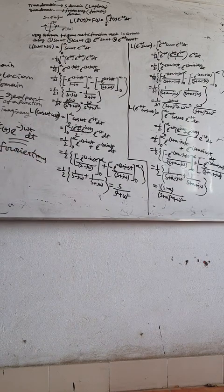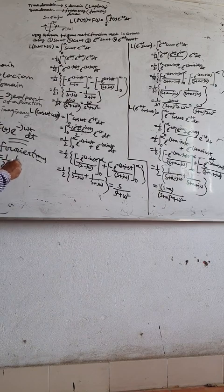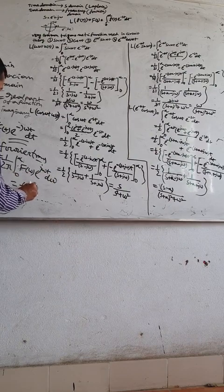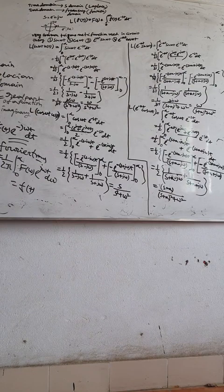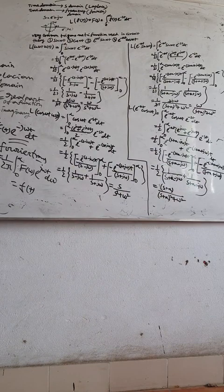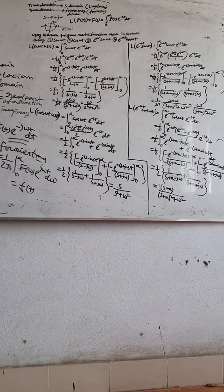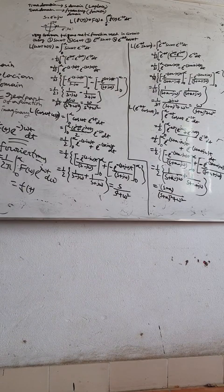The inverse Fourier transform is one by two pi times the integral from zero to infinity of F(omega) times e to the power j omega t d omega, which equals f(t). So time domain converts to frequency domain. For example, if sine of t is given in the time domain, we have to express it in the frequency domain — that is Fourier transform.